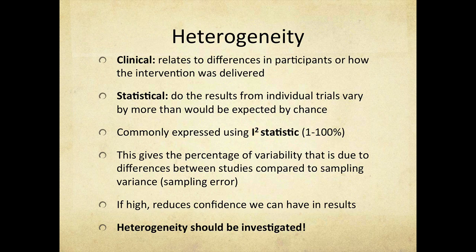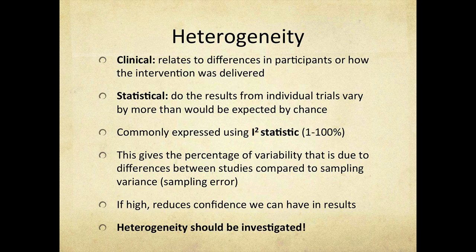Statistical heterogeneity results from study results differing by more than would be expected by sampling error, usually expressed using the I-squared statistic on a scale from 0 to 100%. Any result generally above 50% would be concerning, reducing confidence in the results. As an easy rule, interpret above 50% with caution. You also want to check whether heterogeneity has been investigated, through subgroup analysis or meta-regression, as things like dose of intervention may alter outcomes.